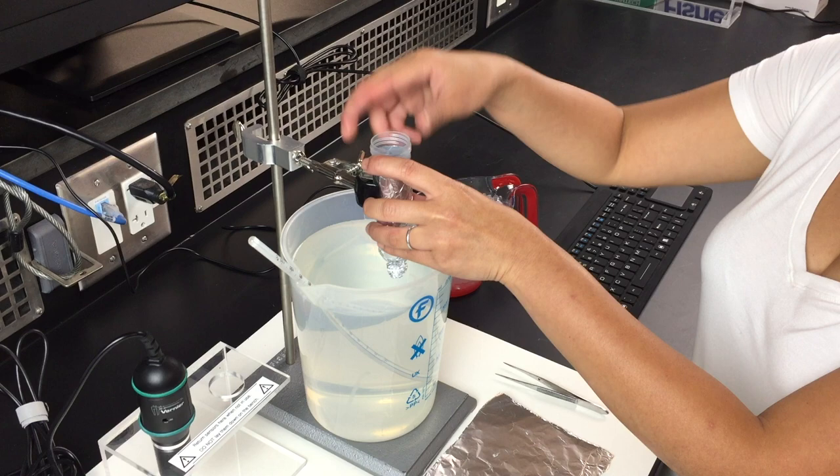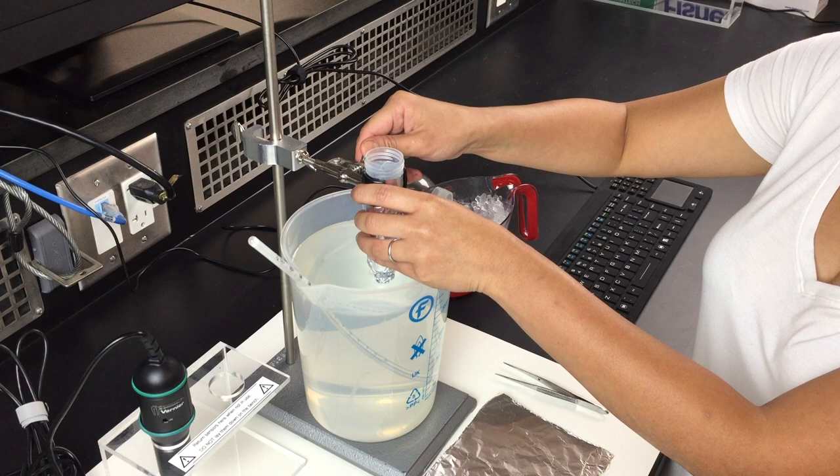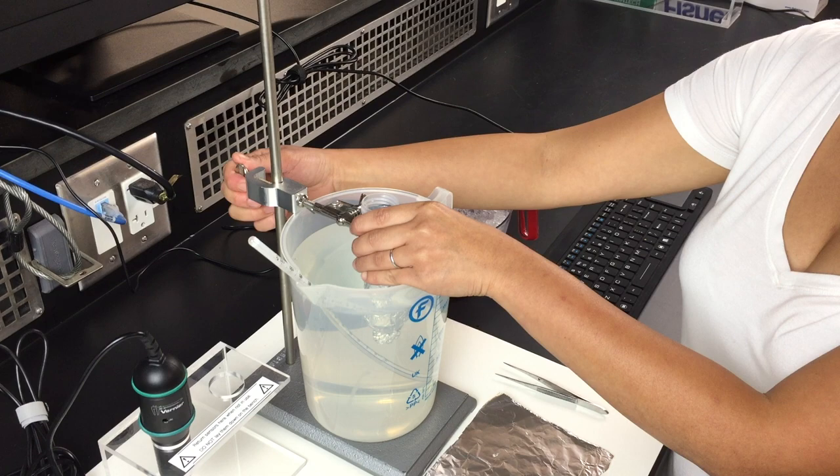Now, you secure the biochamber onto the retort stand with the provided clamp. Tie the clamp at the neck of the biochamber snugly. Lower it down as low as possible to the water bath.